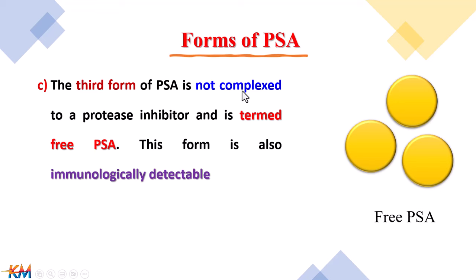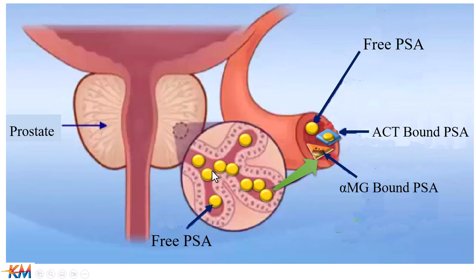The third form of PSA is not complexed to a protease inhibitor, meaning it is free and not bound with plasma proteins, so it is called free PSA. This form is also immunologically detectable because all antigenic sites are not covered, and therefore can be detected using antibodies in ELISA tests. Free PSA is present in the ejaculate and seminal fluid. But when PSA reaches the blood, there are three forms: alpha-MG bound PSA, ACT-bound PSA, and free PSA. Free PSA constitutes about 30 percent of total blood PSA.